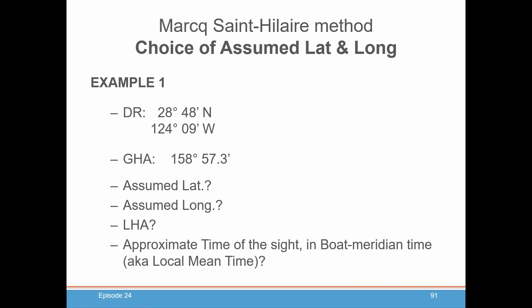Let's do an exercise. Here's your DR position. Let's say that the GHA of the sun happens to be this — you pull that out from the nautical almanac and did your interpolations. What would you use as an assumed latitude? What would you use as an assumed longitude? And what will the LHA be based on that assumed latitude and longitude? Also, let's approximate the time of the sight in boat meridian time, or local mean time of the boat, based on what you calculate the LHA to be. You may want to pause the video now, work it out, and then we can look at the answer.